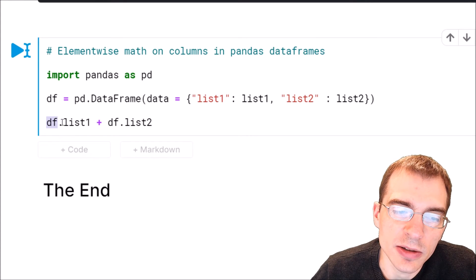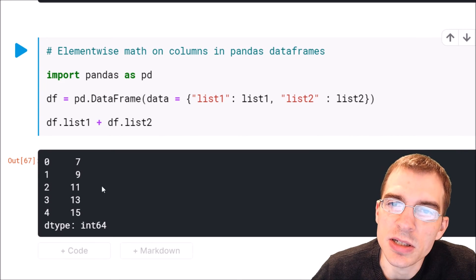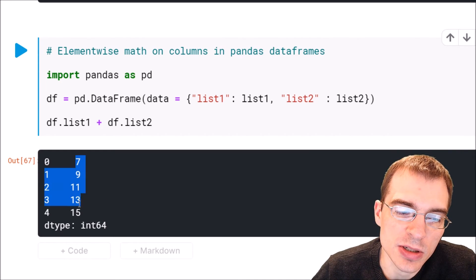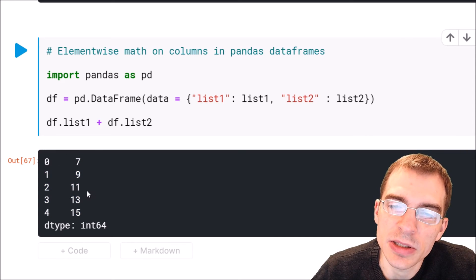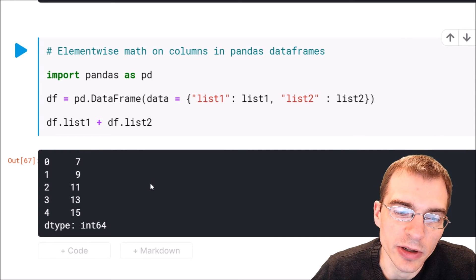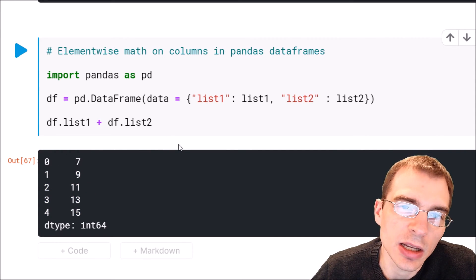Then we can just use the columns of the data frame and add those together. We're going to add the list one column plus the list two column, and we'll run that. We can see the result is the same in terms of the values, but now it's structured as a column instead of a row because it's a data frame. But it essentially does the same element-wise math.